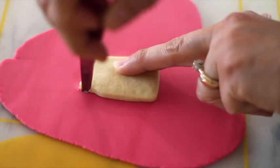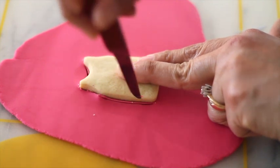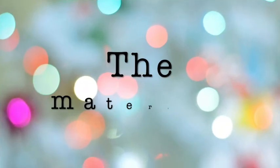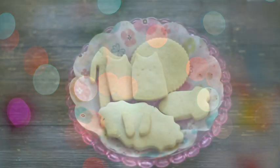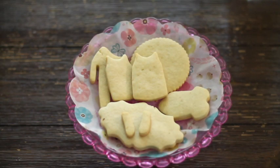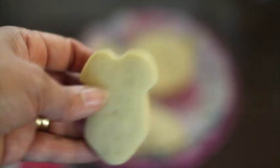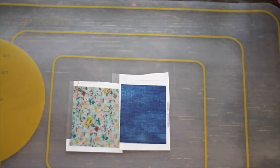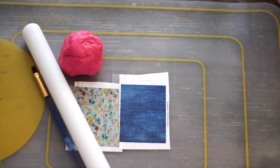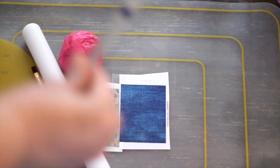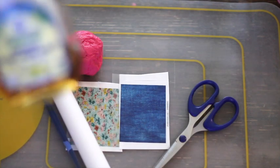You will need baby clothes cookies, edible images, fondant, a rolling pin for fondant, a brush, clean scissors, and corn syrup.